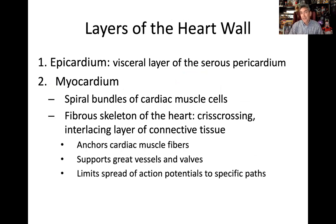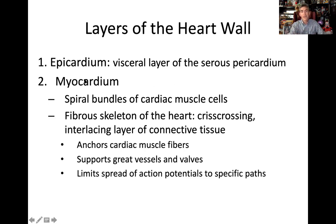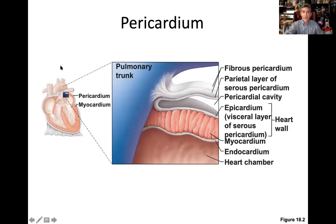I focus a lot more on physiology — yes, anatomy names are significant, but you have to understand what the parts do. Using common prefixes: 'epi' means superficial, so epicardium is the outer layer of the heart; 'myo' refers to muscle, so myocardium is the heart muscle; 'peri' means surrounding, so pericardium is the outer surrounding layer.